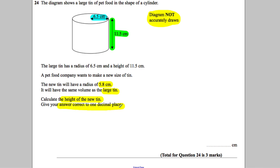We need to calculate the height of the new tin. Give your answer correct to one decimal place. Well, if they've got to have the same volume, let's work out the volume of the large tin to start with.